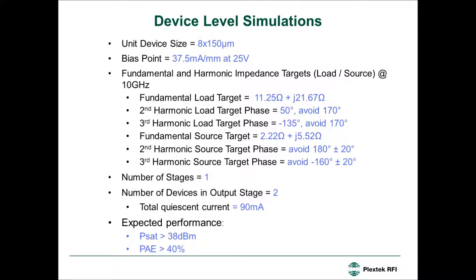To summarize the device level simulations: the unit device size is 8×150 micron, the bias point is 37.5 milliamp per millimeter, and the fundamental load target is 11.25 + j21.67 ohms. The best phase for the second harmonic load is 50 degrees; for the third harmonic, ideally minus 135 degrees, but as long as we avoid the area around 170 degrees we should be fine. The fundamental source target is 2.2 + j5.5 ohms. For the second harmonic source, avoid the region around 180 degrees; for the third harmonic, avoid around minus 160 degrees.